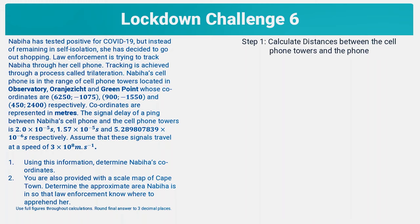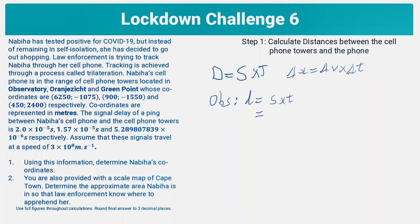We can use either distance equals speed times time, or delta x equals delta v times delta t — these are the same equation, just different notation. For the Observatory cell phone tower, distance equals speed times time: three times 10 to the eight meters per second, multiplied by two times 10 to the negative five seconds, gives us a distance of 6,000 meters.